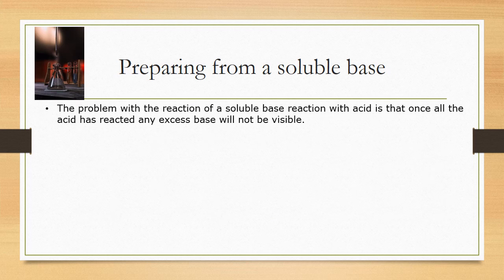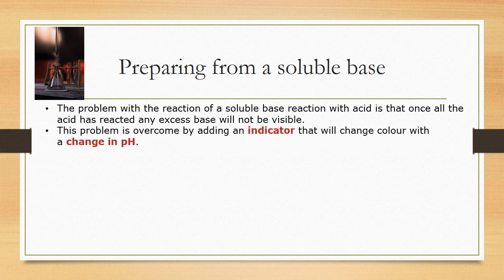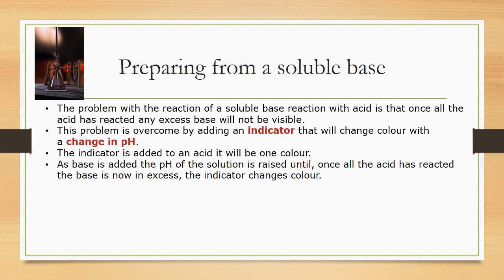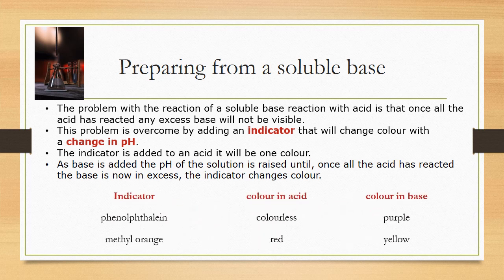For preparing a salt from a soluble base (alkali), the problem is you won't see when the reaction is completed — there are no bubbles like with an insoluble base. So an indicator is used; it changes colour when the pH shifts from acidic to alkaline. The indicator is added to the acid, and the base is added until the indicator changes colour, showing an excess of base. For example, with phenolphthalein the solution starts colourless and turns purple; with methyl orange it goes from red to yellow.